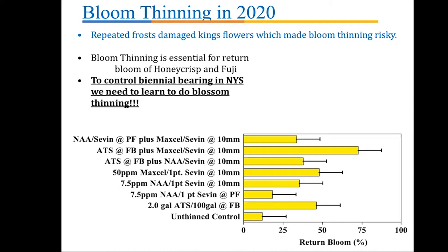However, if your block of Honeycrisp, Fuji, or Gala has less than 40% damage, I think you should blossom thin, because blossom thinning will give us repeat bloom. Here's data from one of our trials at Geneva with Honeycrisp: the unthinned control had return bloom of about 10% — not enough for a full crop. Just a single ATS spray at two gallons resulted in close to 50% return bloom. When we combined ATS with later applications of MaxLN7, we were up at 75% return bloom. The ATS was a big part of that repeat bloom.